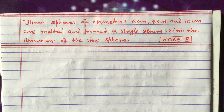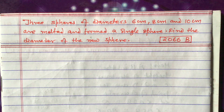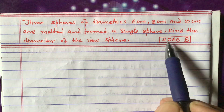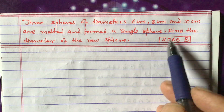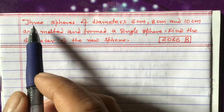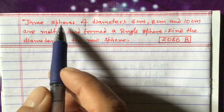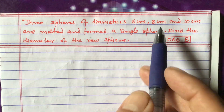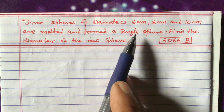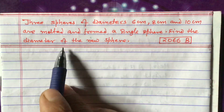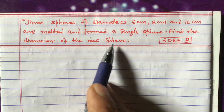Dear students, today I'm going to teach you an equation related to spheres from mensuration class 10. This question was asked in 2066 for the central development region and is very important. Three spheres of diameter 6 centimeter, 8 centimeter, and 10 centimeter are melted to form a single sphere. Find the diameter of the new sphere so formed.